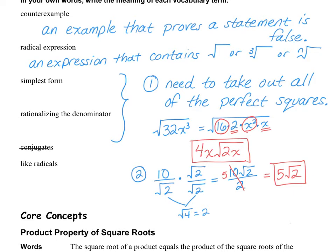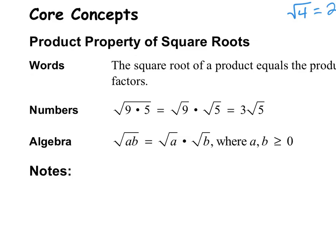I'm not going to be talking about conjugates, but I will talk about like radicals. Like radicals — if you have the square root of 2 plus 3 square roots of 2, there is an invisible 1 in front of the first square root of 2. So you can combine those together just like you would like terms, and those combine to give you 4 square roots of 2, because you have 1 here and 3 here. So the reason we're able to simplify square roots this way is because of the product property of square roots.